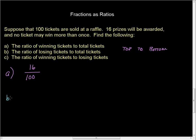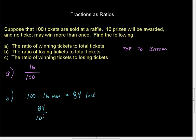Part B works the same way. The only difference we have to worry about here is that it's the ratio of losing tickets to total tickets. In that case, if we have 16 winning tickets and we started out with 100, 16 won. When we subtract those, we get 84 lost. Our losing tickets number is 84. So we have 84 losing tickets, unfortunately. And the ratio of losing tickets to total tickets is 84 to 100. That's part B.